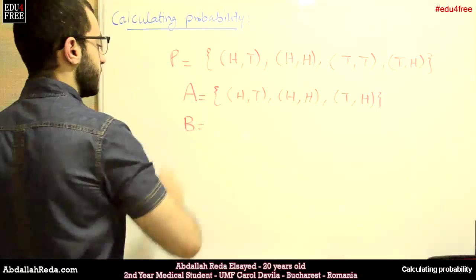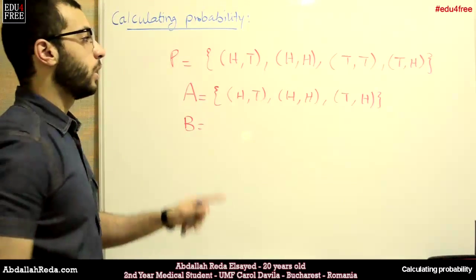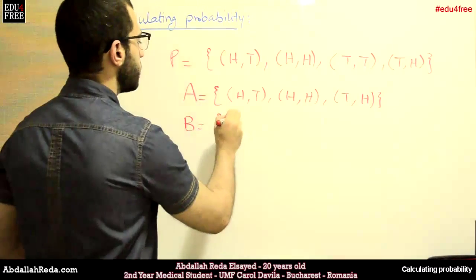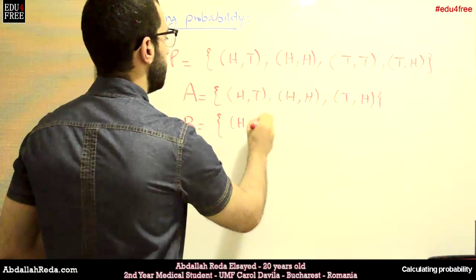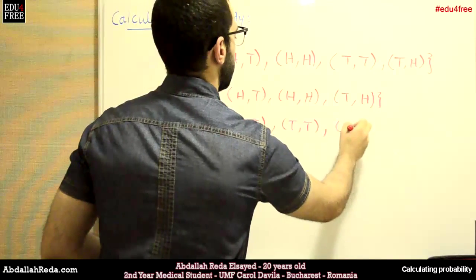Then B is the opposite. The probability of the appearance of at least one tail. So again, we'll have this, and here are two tails, and a tail and a head.